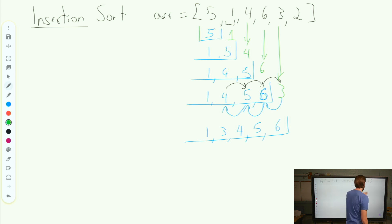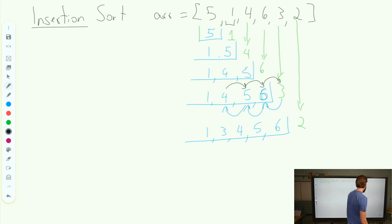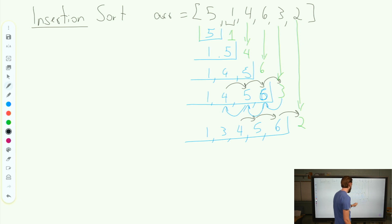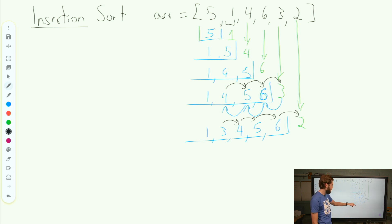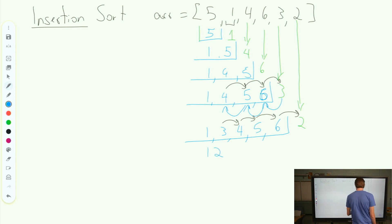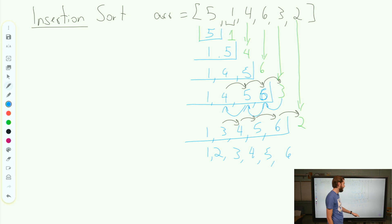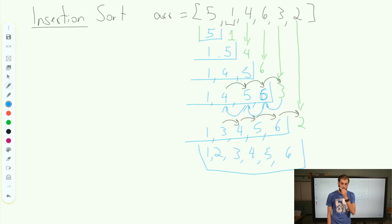And then finally, I drop down my 2. I compare 2 to 6 — 2 is smaller, shift it over. 2 is smaller than 5, shift it over. 2 is smaller than 4, shift it over. 2 is smaller than 3, shift it over. 2 is bigger than 1, so 2 gets slotted right in there. And I finally have my sorted list of 1, 2, 3, 4, 5, and 6. So we've finally inserted and sorted our list.